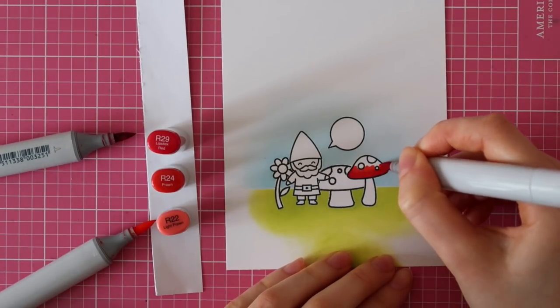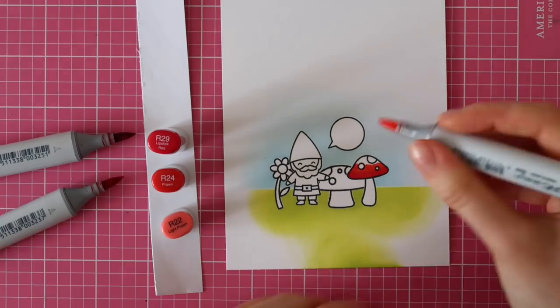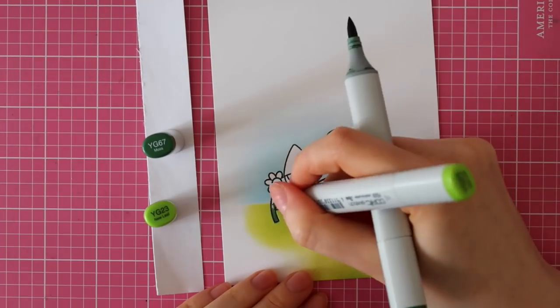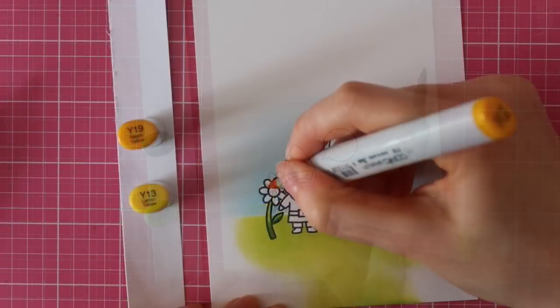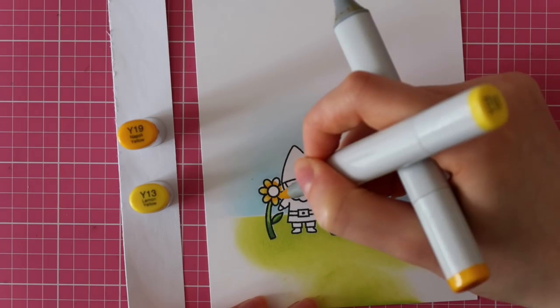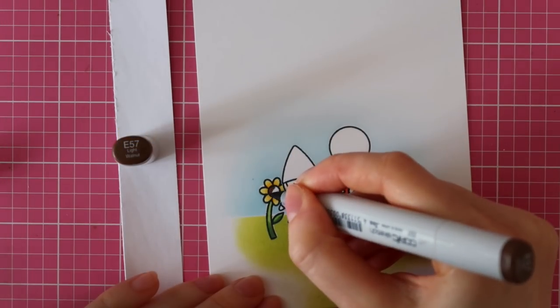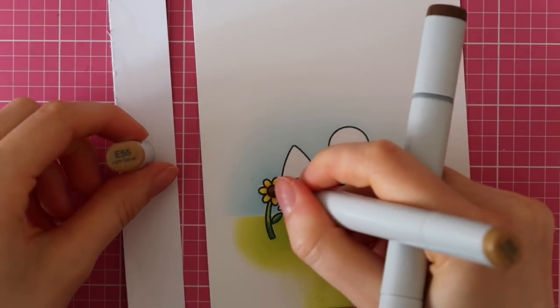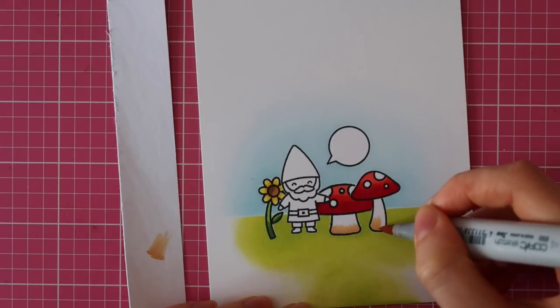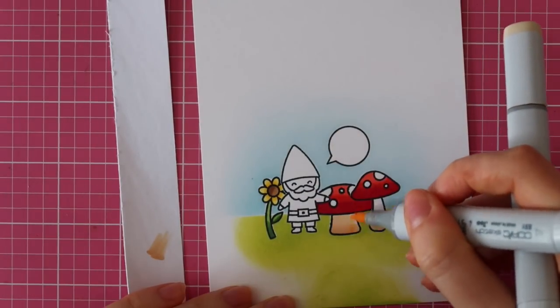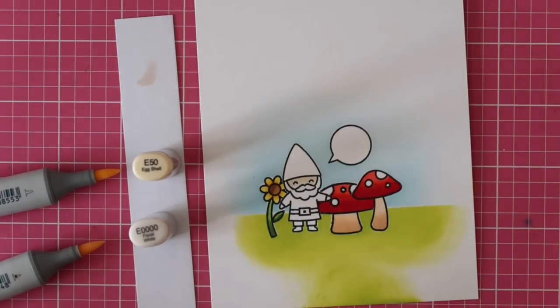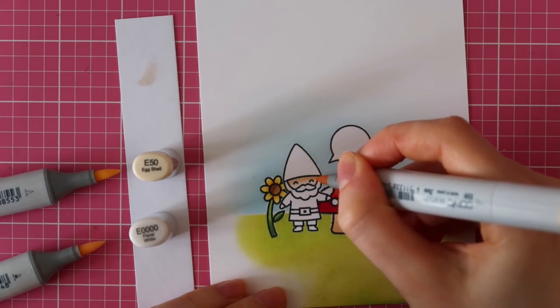Now that I stamped all of my images, it's time to color them using Copic Sketch markers. For the mushrooms, I'm using R29, R24, and R22. Then next for my flower, I'm using YG67 and YG23. For the actual flower, I'm using Y19 along with Y13, and I'm also using E57 and E55. To color the rest of the mushrooms, I am using E50 and E53. So first I used E53 and then I used E55 to add the shading.